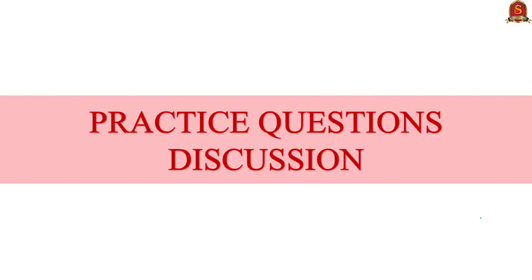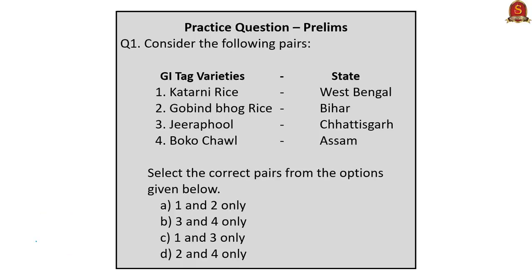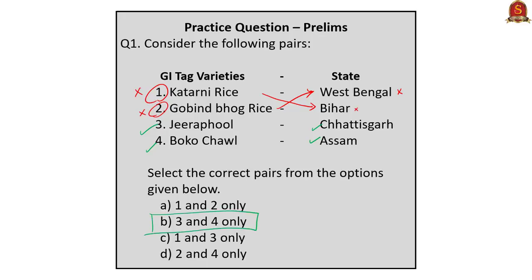Question 1 asks to match GI tag rice varieties with their respective states. Katarni rice grows in Bihar, not West Bengal — so pair 1 is wrong. Gobindobhog rice grows in West Bengal, not Bihar — pair 2 is also wrong. Pairs 3 and 4 are correct: Jirashail variety is from Chhattisgarh and Boka Chawal variety is from Assam. The correct answer is option B: 3 and 4 only.